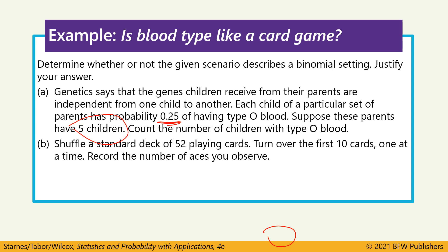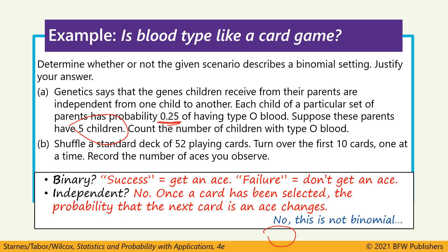Part B: shuffle a standard deck of 52 playing cards, turn over the first 10 one at a time, and record the number of aces. Binary — yes, success is an ace, failure is anything else. But they're not independent. If we flip over a card and it's not an ace — say, a queen — now there are only 51 cards left. It started as 4 out of 52 aces; after flipping that queen, it's 4 out of 51. The probability is changing, which also violates the same probability requirement. So this is not binomial.